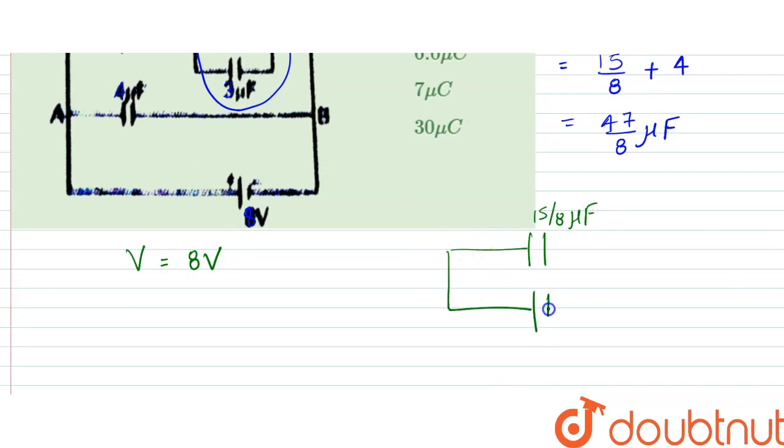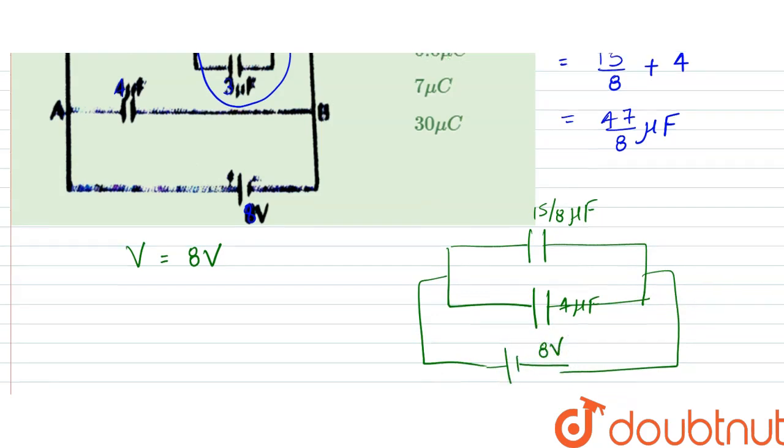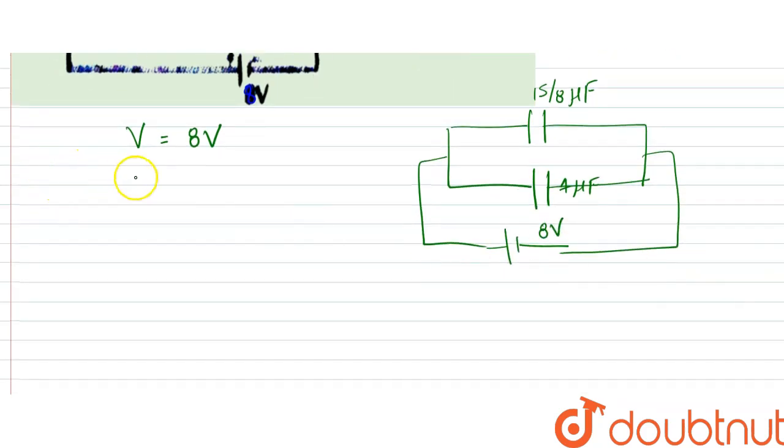And in lower branch it would be 4 microfarad, right, and both have same potential across them that is 8 volt, right. So what we can say is that the capacitance we can consider to be equal to 15 by 8 microfarad.